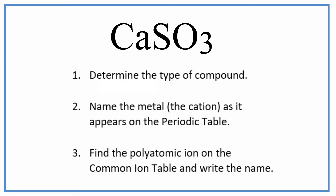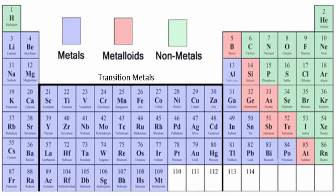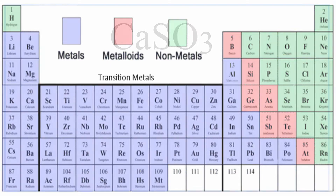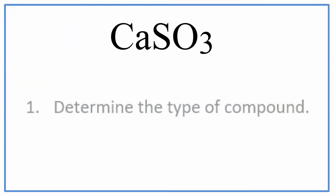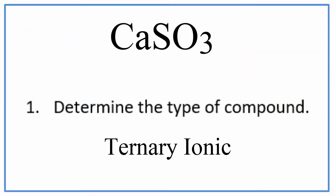First, we need to make sure we have the right type of compound. On the periodic table, we can see that calcium is a metal, and SO3 is a group of non-metals — a polyatomic ion. So that makes this a ternary ionic compound.